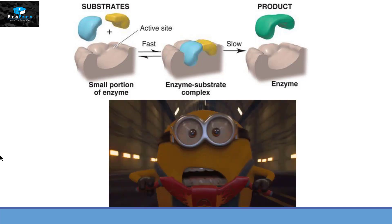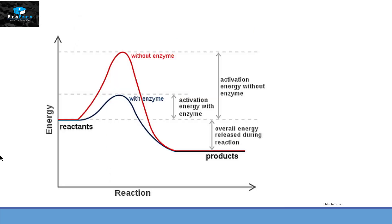Enzymes proceed reactions in the given time, as you can see in this graph showing reactions with and without enzyme. On the y-axis we have energy and on the x-axis we have reaction progress. Without the enzyme, the activation energy is quite high, represented by the red line. With the help of an enzyme, it lowers the activation energy, represented by the blue line.